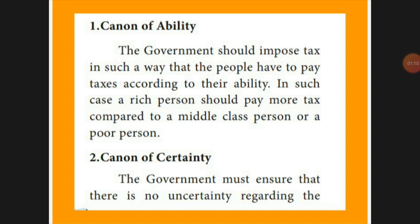Next is the Canon of Certainty. Uncertainty should not be there while collecting a tax — that means you should not collect the tax forcibly or without willingness. The tax collection should not be an arbitrary one. If it is arbitrary, it will have a bad effect on the government and people will pay unwillingly, disturbing their working ability. For example, forcing tax collection during a crisis like the corona time would affect the people.